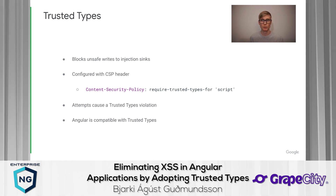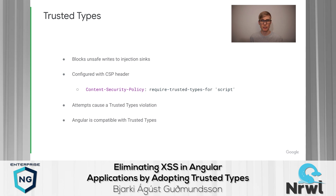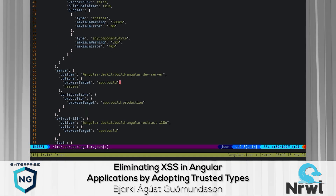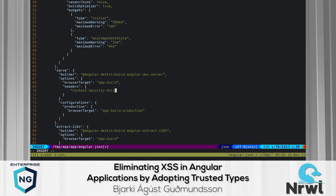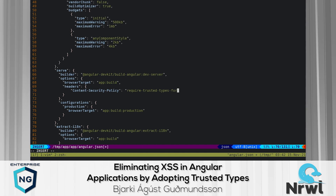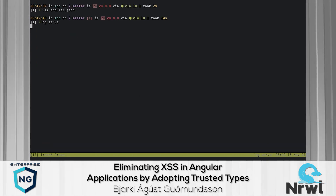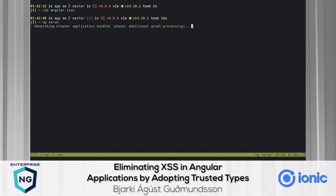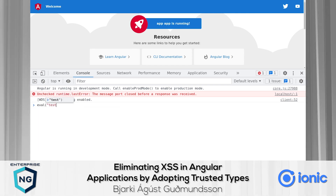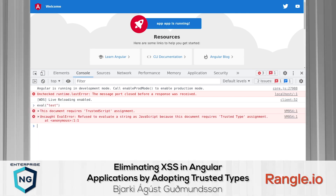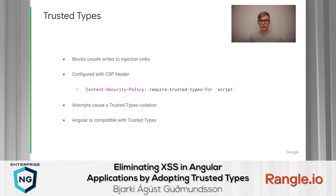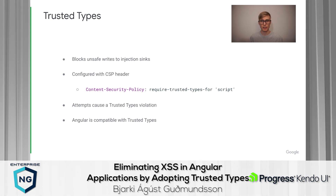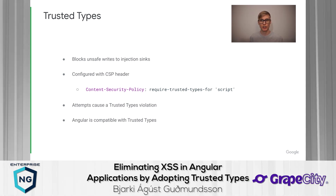Angular has recently been made compatible with trusted types, meaning that using Angular and its templating language will not cause any violations. When running your Angular application locally, you can enable trusted types by adding the CSP header to Angular.json. Enabling trusted types makes an application very secure, but it can also break its functionality. So before rolling this out to production, we first need to identify the trusted types violations and fix them.